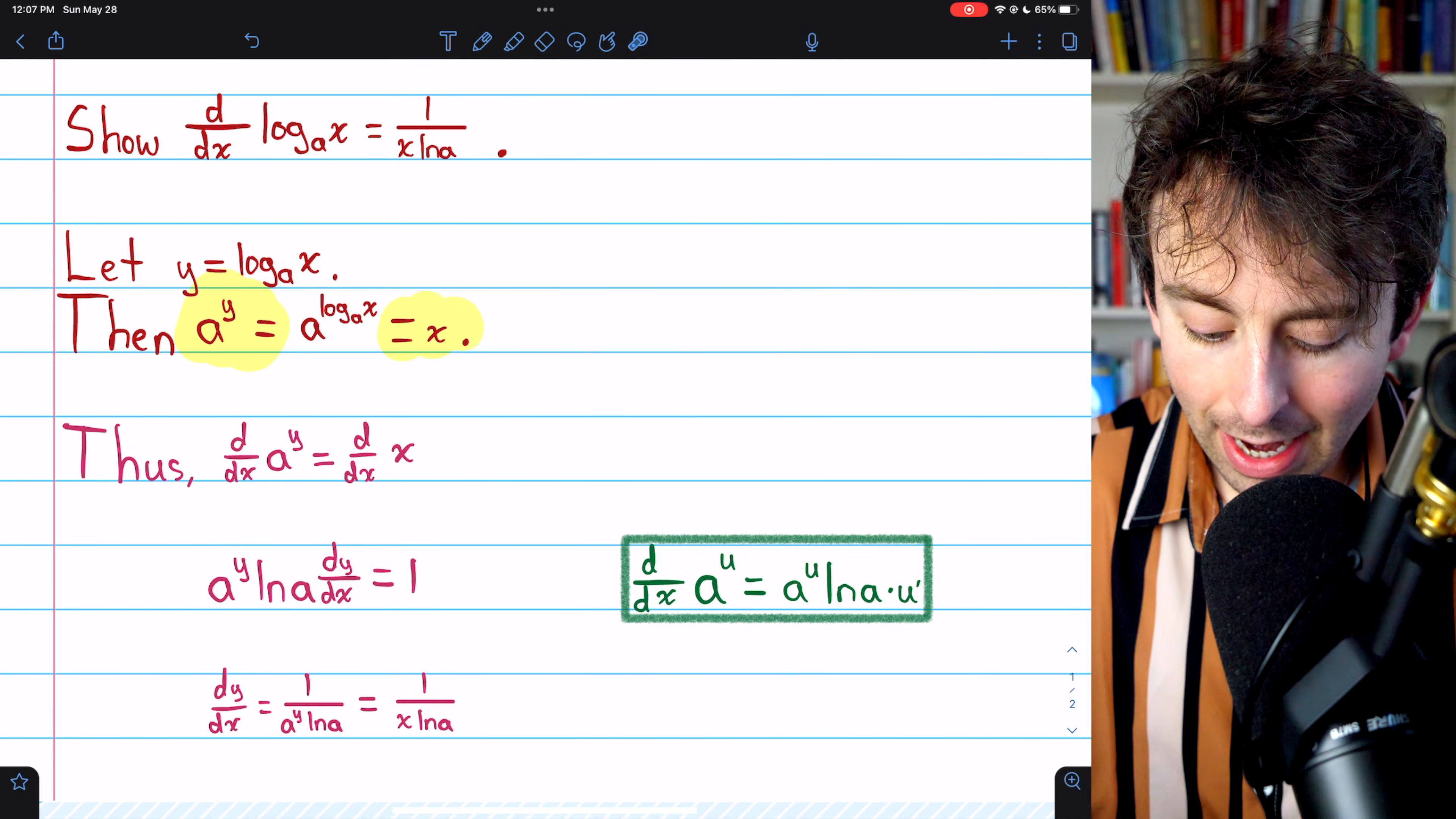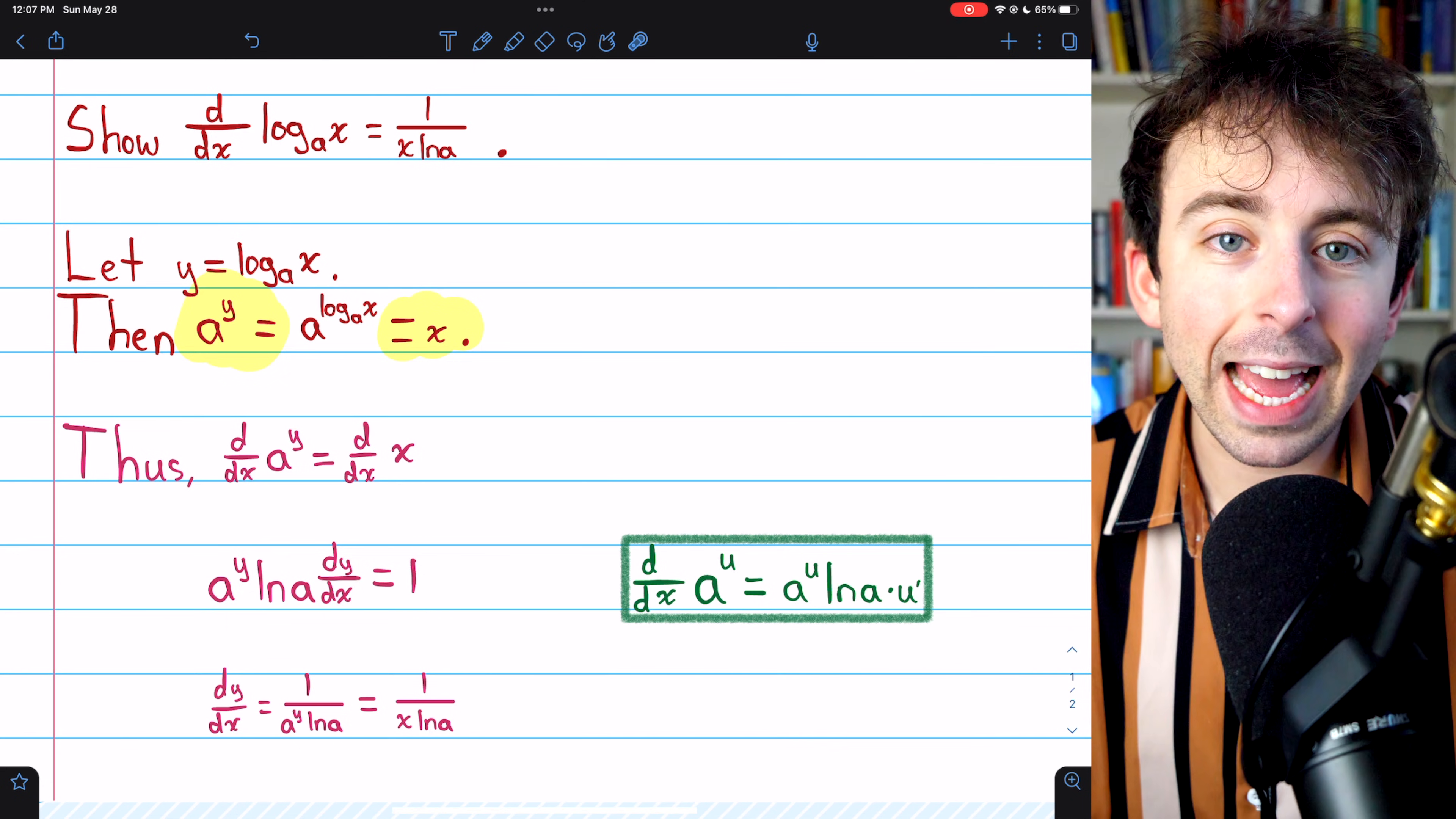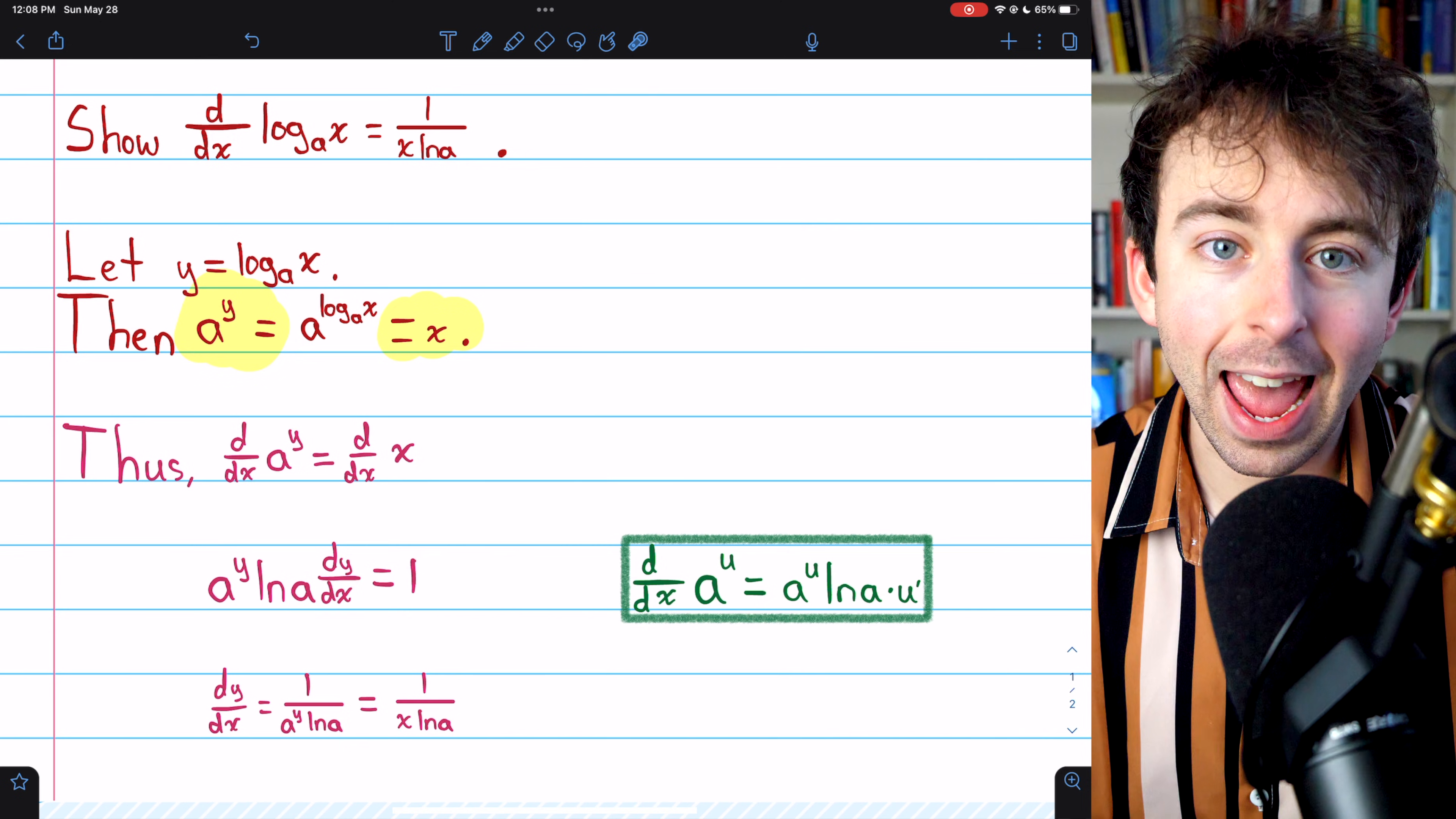dy dx on the left, and then on the right, we just divided both sides by a to the y ln a. So on the right, we have 1 over a to the y ln a.